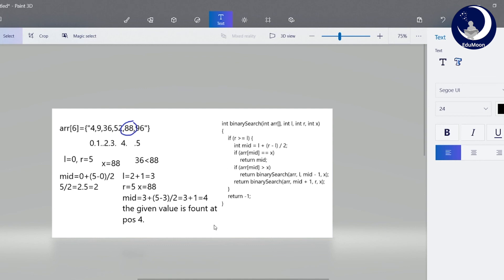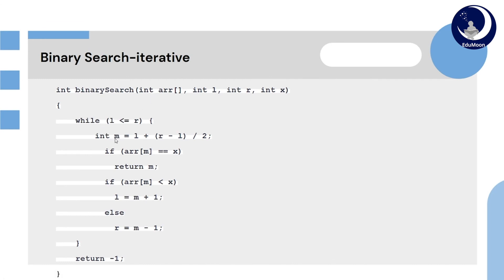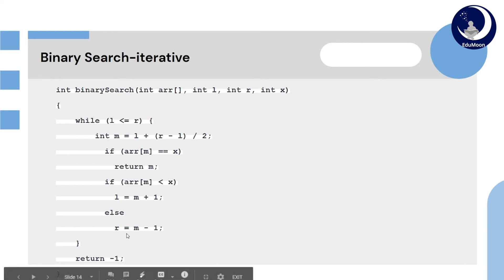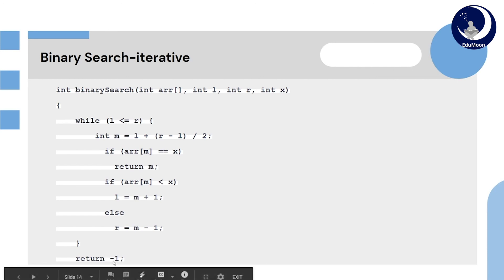This is the recursion method. Next, we will see the iterative method. In the iterative method, we will run a while loop, using the same formula for finding the middle value. If array[mid] equals x, then return mid. If array[mid] is less than x, then the leftmost value equals m plus 1; else, the rightmost value equals m minus 1. If l is greater than r, then minus 1 — item not found — will be returned. This is the iterative method for binary search.